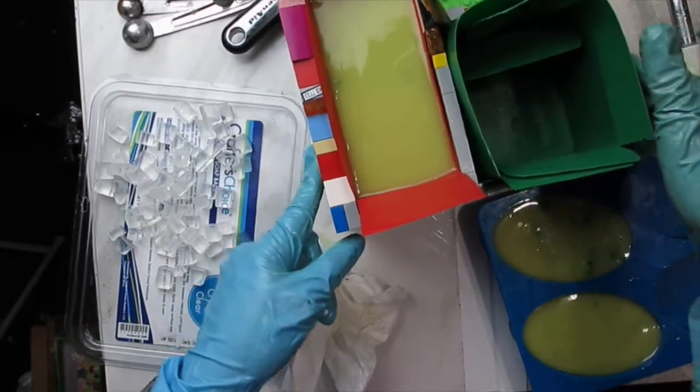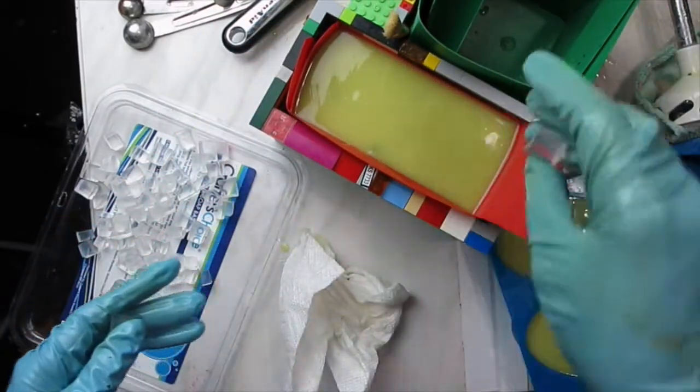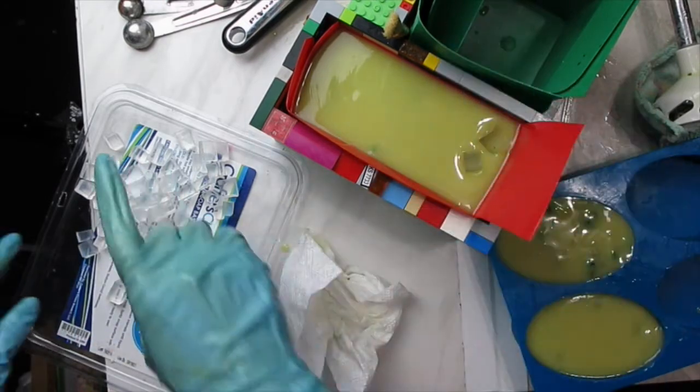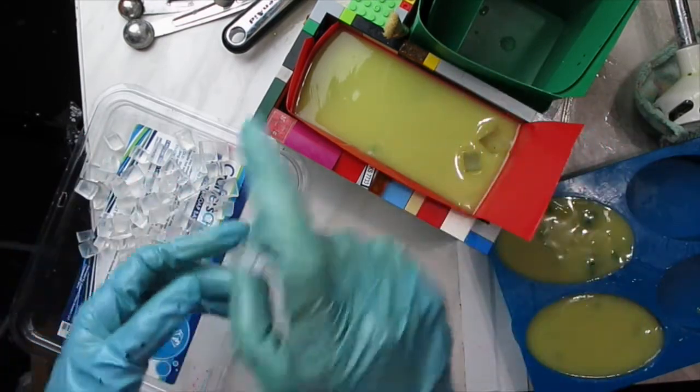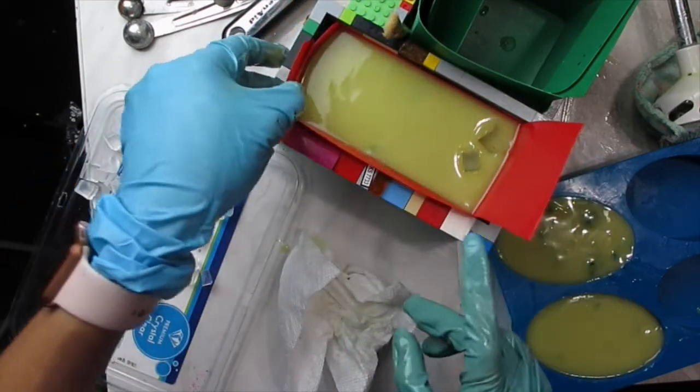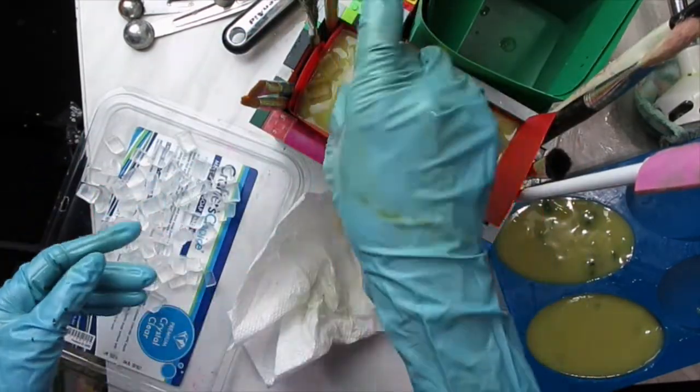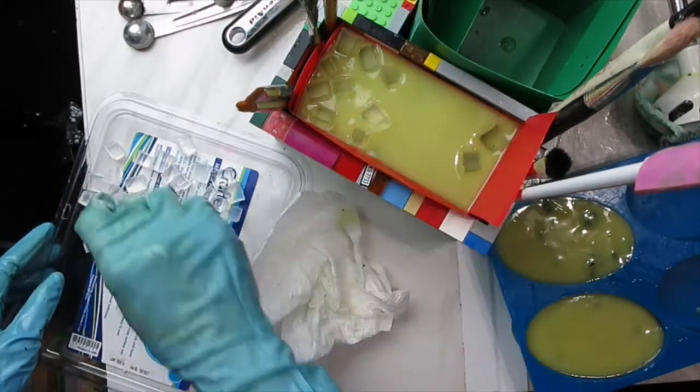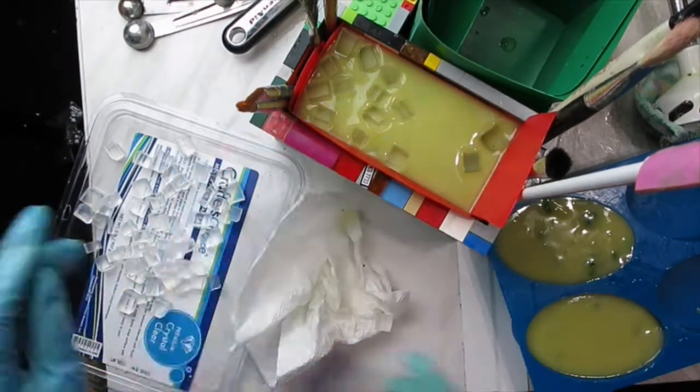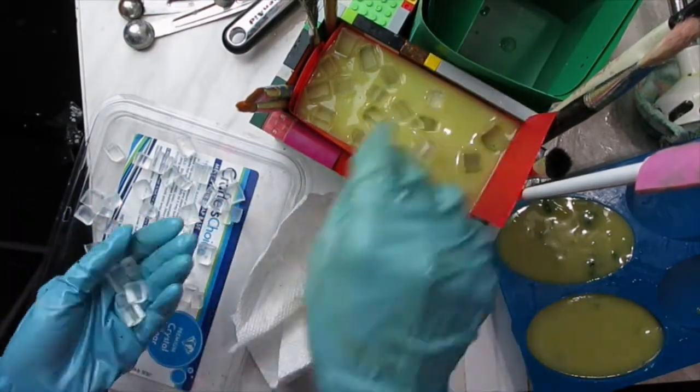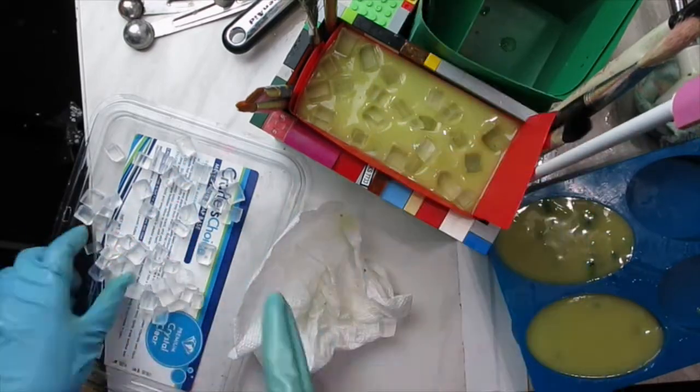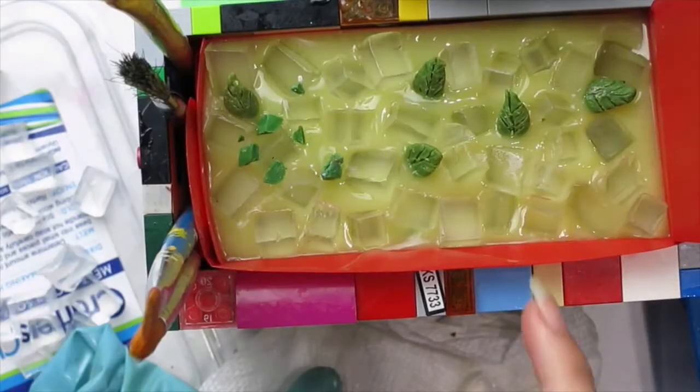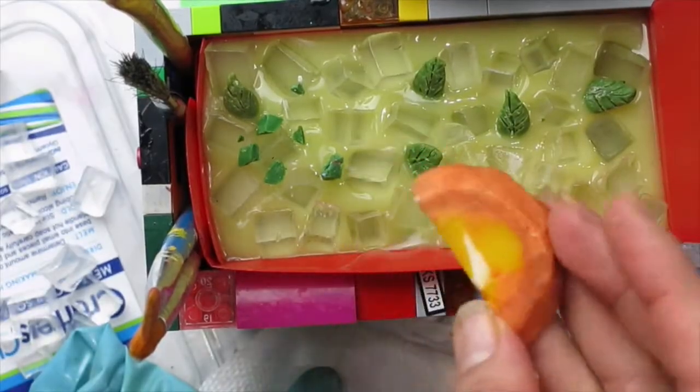I had cut some cubes of clear melt and pour—it's actually crystal clear melt and pour from Crafters Choice. This is to simulate ice cubes since I'm going with a summer drink theme here. Later I'm also going to add some soap dough leaves to simulate maybe cilantro leaves, although they don't quite look like that but just to give it the idea. Last minute I also decided to use some orange slices that I had done with soap dough.